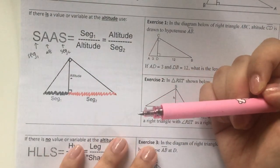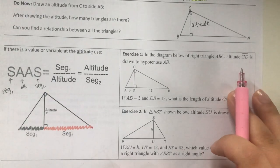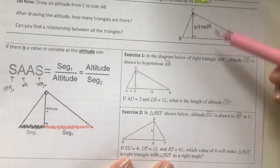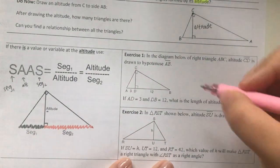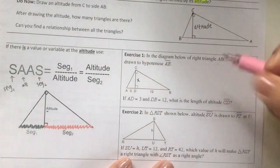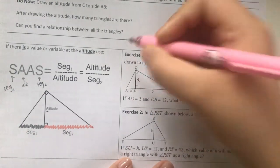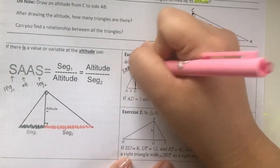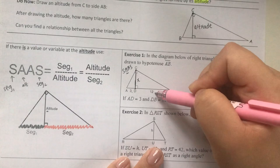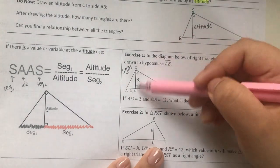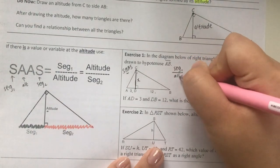Let's try Exercise 1. In the diagram below, I have triangle ABC with altitude CD. I need to find out altitude CD. Now whenever I need to use the altitude, I must use SAAS. That means AD is 3, BD is 12. What is the altitude CD?